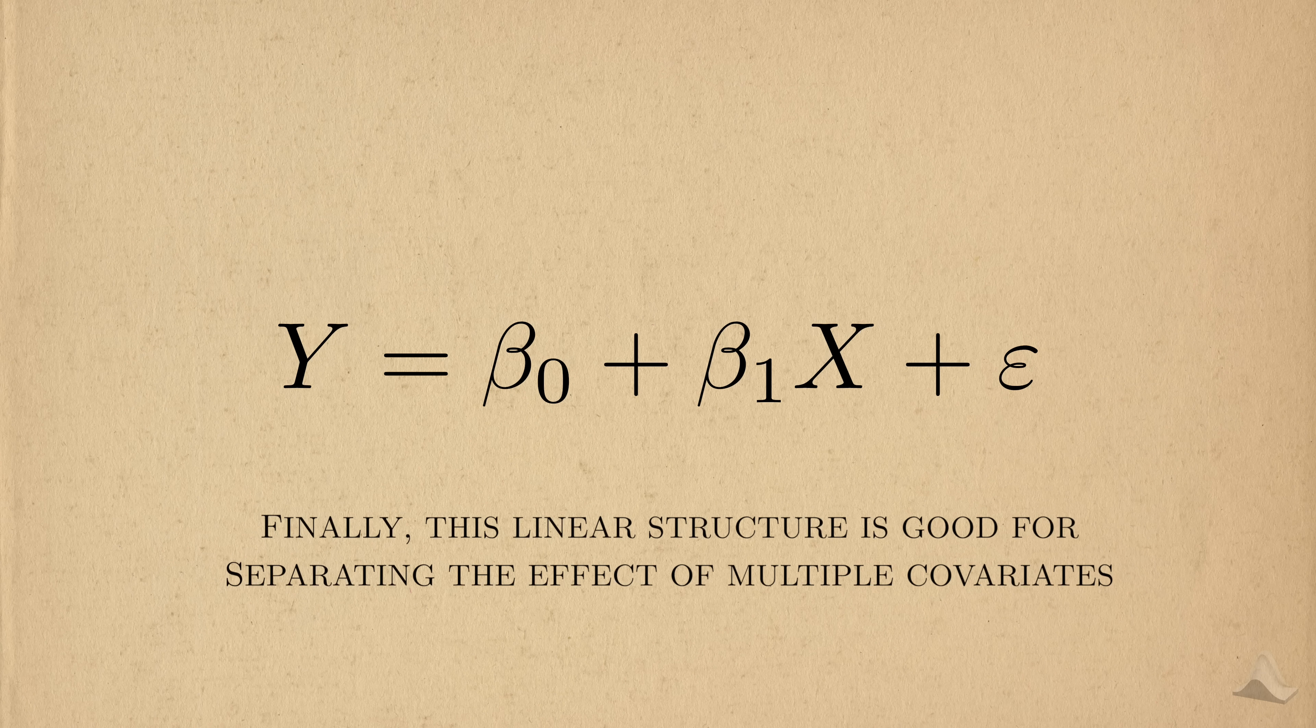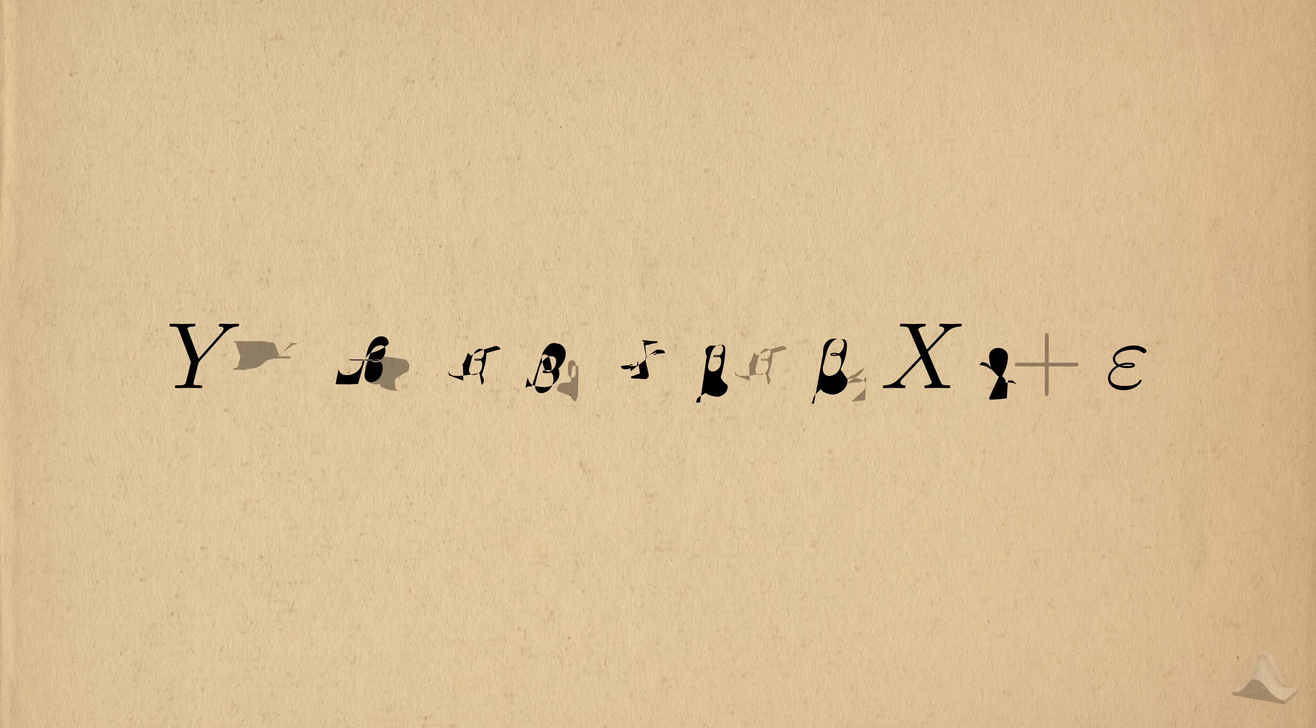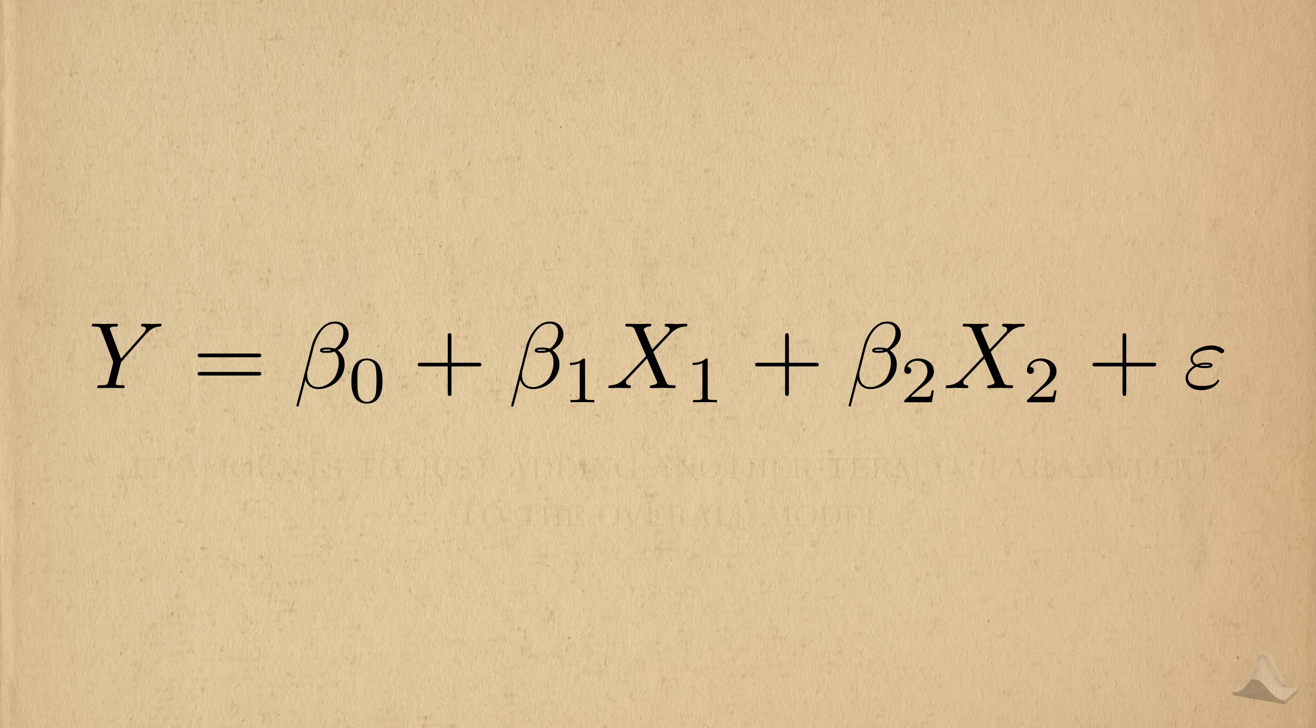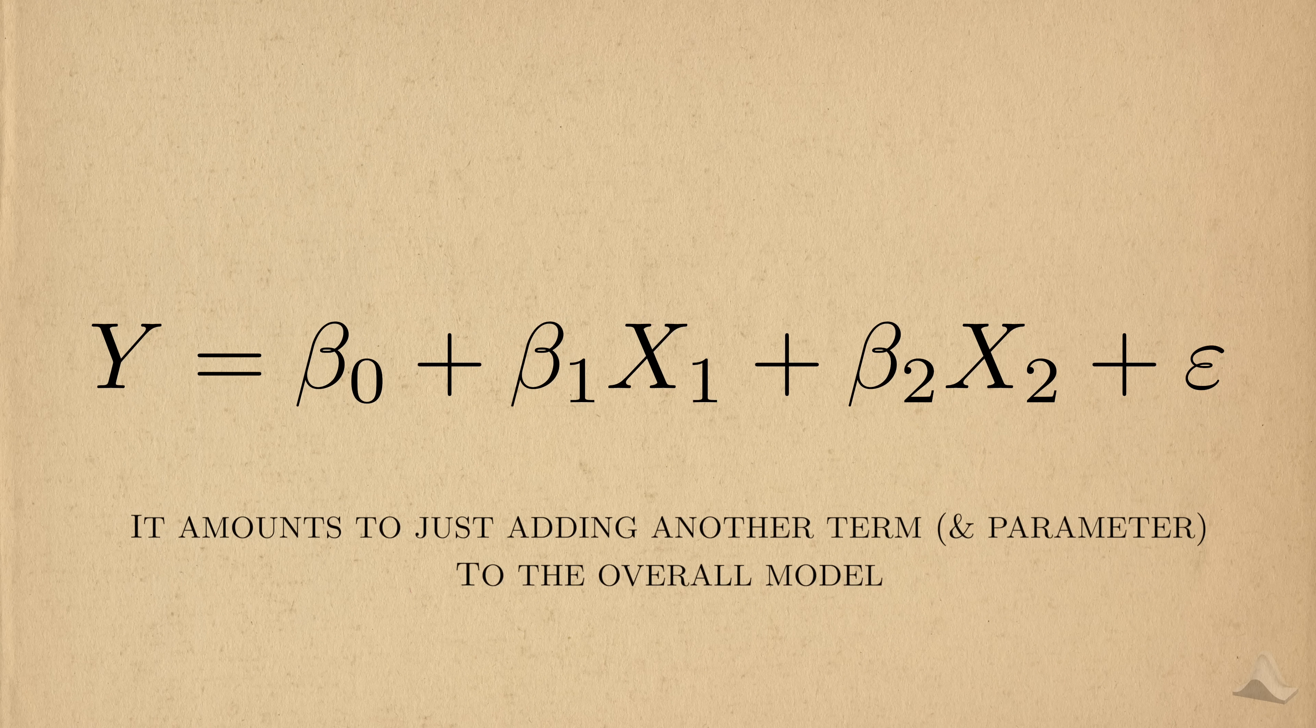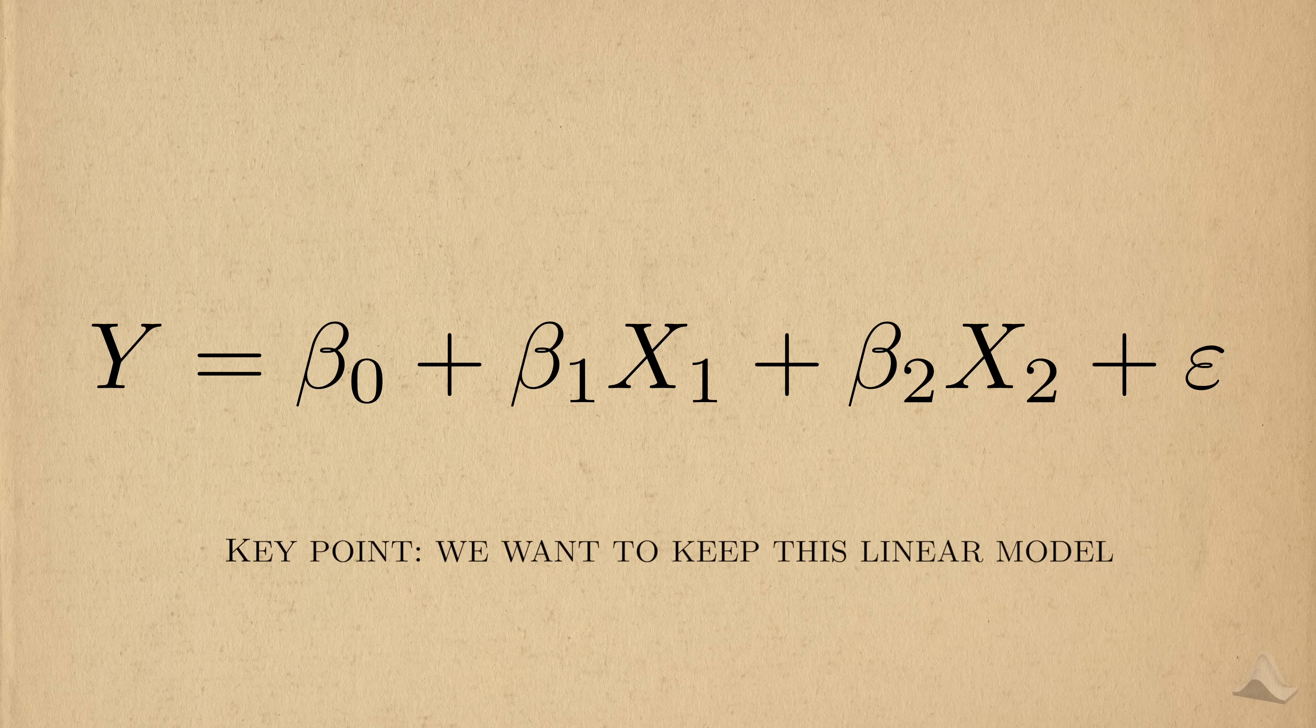Finally, this linear structure is convenient for separating the effects of different covariates. If we think of two different variables, x1 and x2, then we can just add them as two separate terms in the model. This linear model is an assumption we'd like to keep as we move into logistic regression.